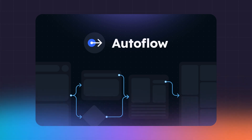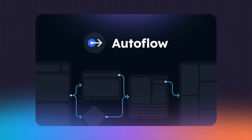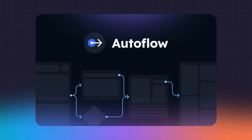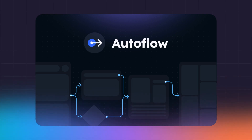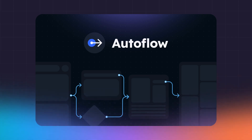With Autoflow you can: quickly visualize and map out user flows and journeys; iterate on site maps and workflows faster by automatically adjusting connections when moving objects; create sophisticated diagrams and charts; and export diagrams as images or PDFs. Price: $29 for a single user license.